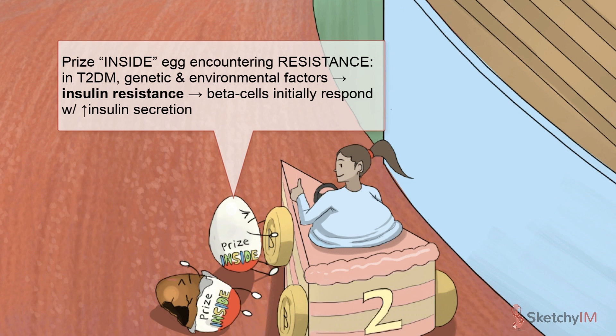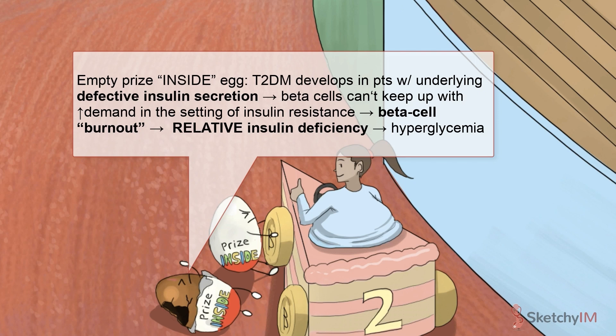Over the course of years, beta cells begin to burn out — basically, there's beta cell loss and dysfunction, as depicted by this other egg guy, dysfunctional and empty inside. As a result, we have a decline in insulin secretion. Once insulin production is unable to keep up with demand, blood glucose levels rise. To make matters worse, hyperglycemia itself leads to further dysfunction, inflammation, and even destruction of beta cells, which makes the relative insulin deficiency even worse — it's a vicious loop. Though most type 2 diabetics still produce some insulin and are not insulin-dependent, long-standing disease leads to continued loss of beta cell function, and patients may eventually require exogenous insulin for glucose control.